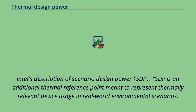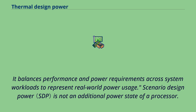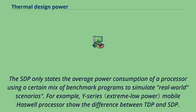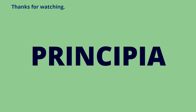Intel's Scenario Design Power (SDP) is an additional thermal reference point meant to represent thermally relevant device usage in real-world environmental scenarios. It balances performance and power requirements across system workloads to represent real-world power usage. Scenario Design Power is not an additional power state of a processor. The SDP only states the average power consumption of a processor using a certain mix of benchmark programs to simulate real-world scenarios. For example, Y-Series Mobile Haswell processors show the difference between TDP and SDP.